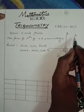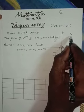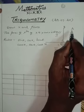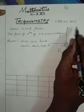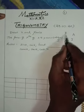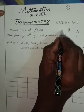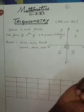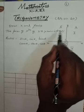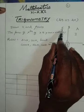In the first quadrant, all ratios — sin theta, cos theta, tan theta, and their reciprocals cosecant theta, secant theta, and cot theta — are positive. A means all are positive. In the second quadrant, S means sin theta and its reciprocal cosecant theta are positive.